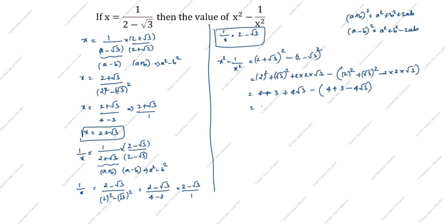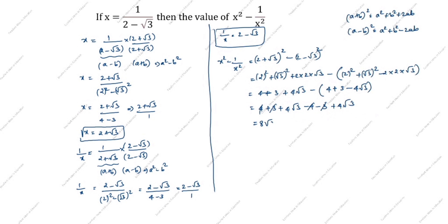Next step: we have 4 plus 3 plus 4 root 3 minus the bracket 4 plus 3 minus 4 root 3. Removing the bracket, minus into plus gives minus, so we get 4 plus 3 plus 4 root 3 minus 4 minus 3 plus 4 root 3. The plus 4 and minus 4 cancel, the plus 3 and minus 3 cancel, leaving plus 4 root 3 plus 4 root 3 equals 8 root 3. So x squared minus 1 by x squared equals 8 root 3. Thanks for watching this video.